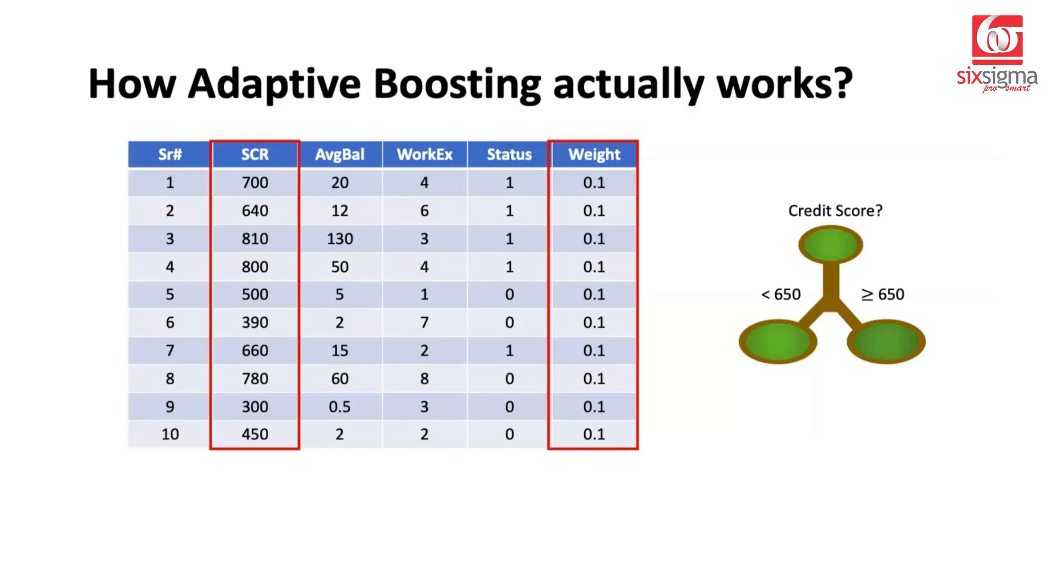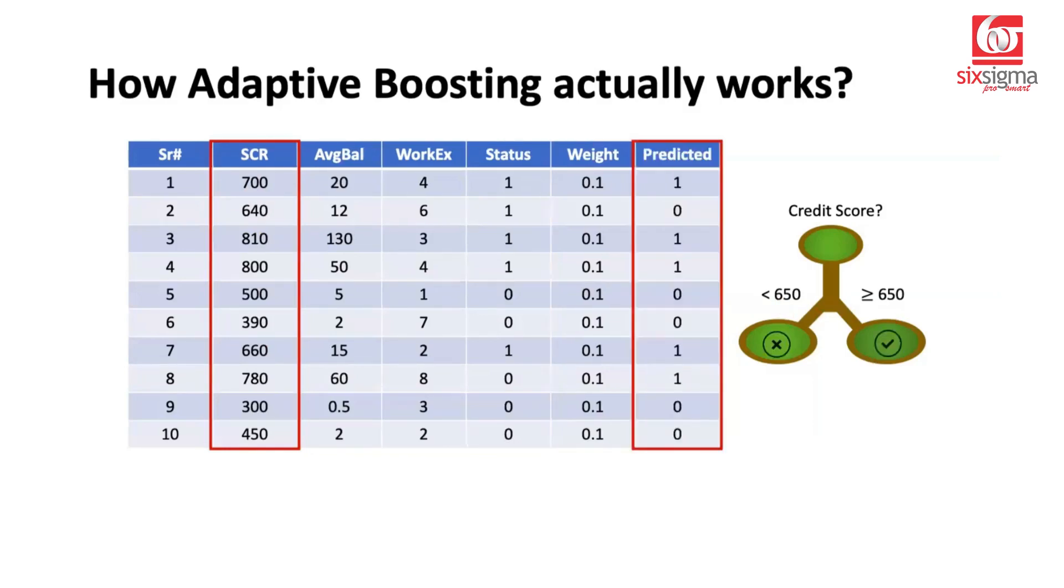Approval here is represented as one and rejection is represented as zero in this data in the status column. So based on this logic, can we generate predictions, which means we have to just compare these values with 650. If the value is greater than 650, we will say it's a one. If it's less than 650, we will say it's a zero, which means rejected. So let's generate a prediction column using this logic. So this was 700, we got a one. This was 640 which is less than 650, so we got a zero. 810, 800, these are all greater, so these are all ones. Anything less than 650 we are putting it as zero. So this is how the prediction has been generated.